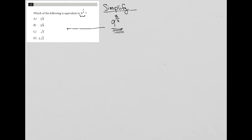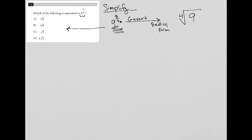So I'm going to take a look at the answer choices. I see that all of the answer choices have a radical. Some of them have a nine under the radical, and two of them have a three under the radical, which tells me I'm going to need to convert this fraction exponent into radical form. The denominator of the fraction becomes the type of root, so it's a fourth root, and the numerator becomes a power on the number under the radical.